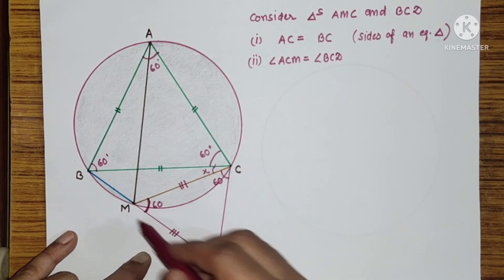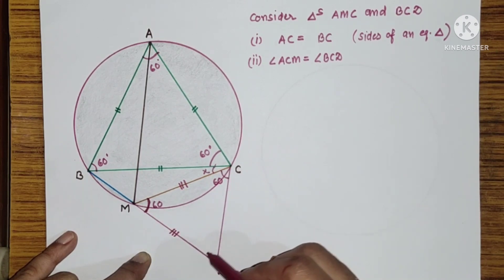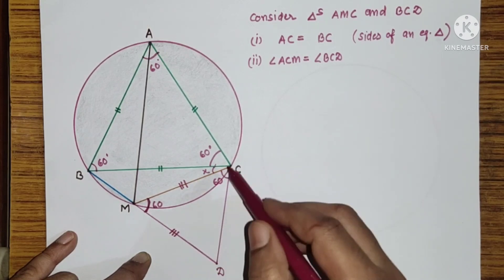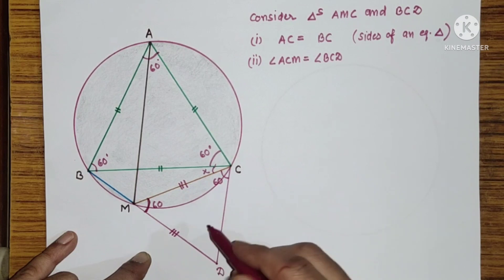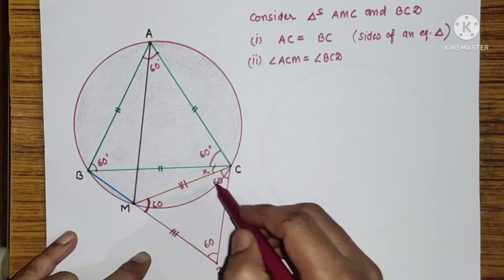Now, since MC and MD by construction are equal, this is 60. So, these two angles will be equal. So, this is 60. So, sum of these two will be 120 and these two are equal. Hence, 60, 60. This will BCD will be 60 plus X.